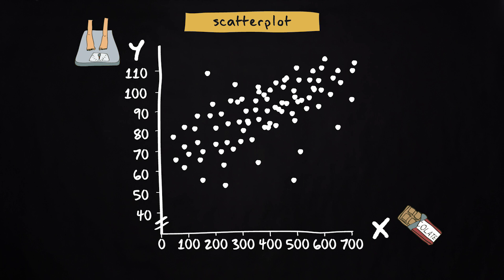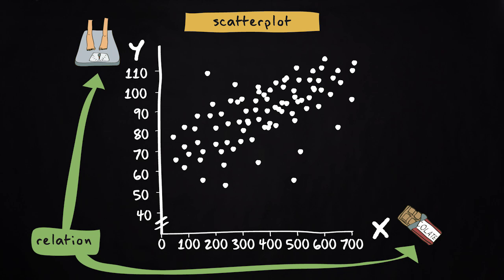The scatter plot shows you at a glance that there is a relationship between chocolate consumption and body weight. The more chocolate you eat, the higher your body weight.